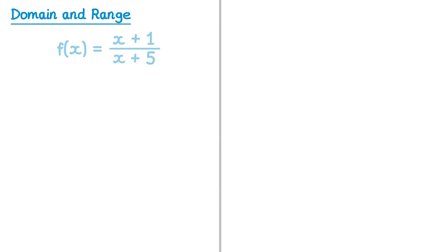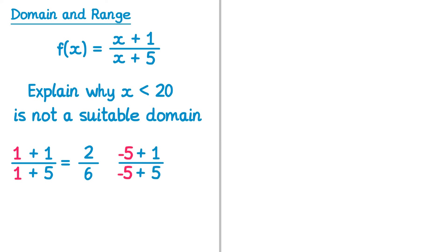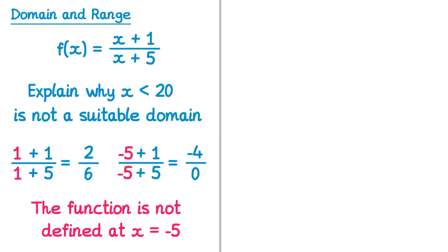Sometimes you may be given a question where you need to explain why a certain domain is not suitable. We have a function and the proposed domain is x less than 20. Try some values less than 20: if x equals 1, we get 1 plus 1 over 1 plus 5, which gives 2 over 6 — an acceptable output. But if x equals negative 5, we get negative 5 plus 1 over negative 5 plus 5, which gives negative 4 over 0. You can't divide by 0, so the function isn't defined at x equals negative 5. Therefore x less than 20 is not a suitable domain — the function is not defined at x equals negative 5.